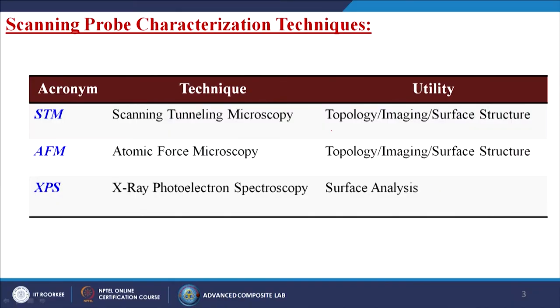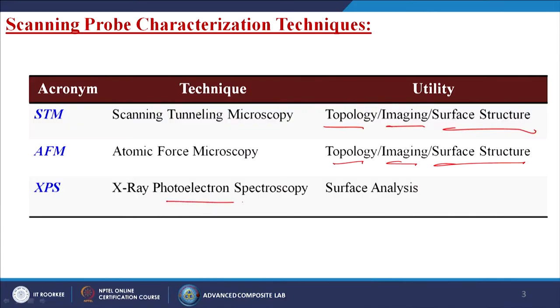So first, what are the scanning probe characterization techniques? STM, scanning tunneling microscopy, gives information about topology imaging and surface structure. AFM, atomic force microscopy, provides topology imaging and surface structure information. The last one is XPS, X-ray photoelectron spectroscopy, which gives surface analysis of that particular material.